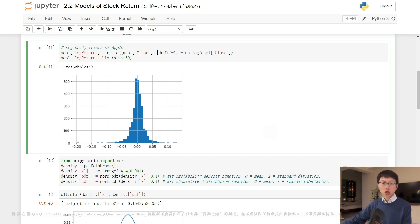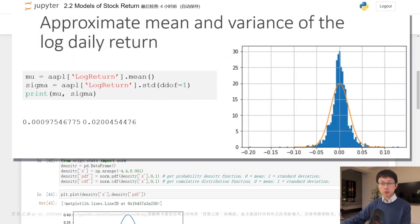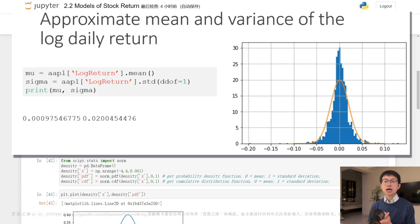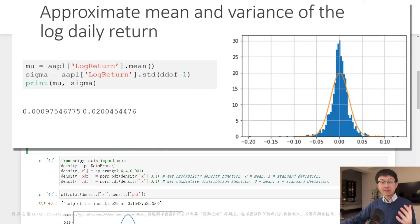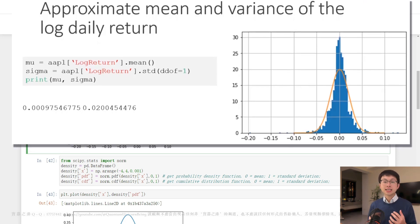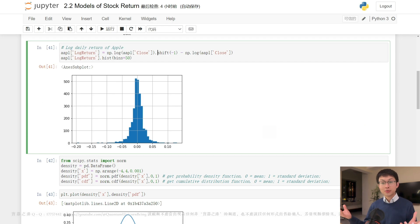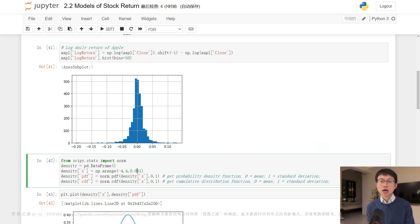To analyze the stock return of Apple, we can compute the log daily return and the resulting histogram is bell-shaped and symmetric, very similar to a normal distribution. Thus, we can model the daily stock return using a normal random variable that can take values from positive infinity to negative infinity, theoretically speaking, of course. And the parameters mu and sigma in normal PDF correspond to the mean and standard deviation of the normal random variable.